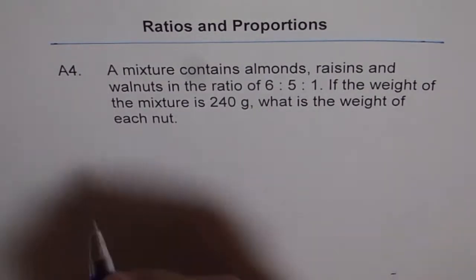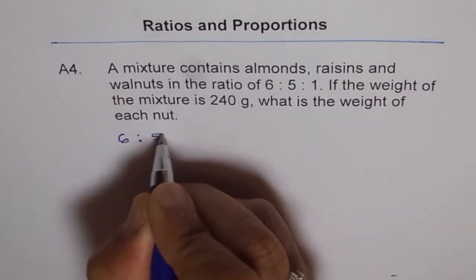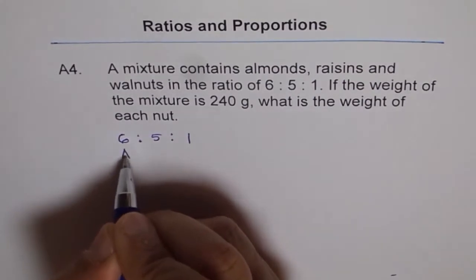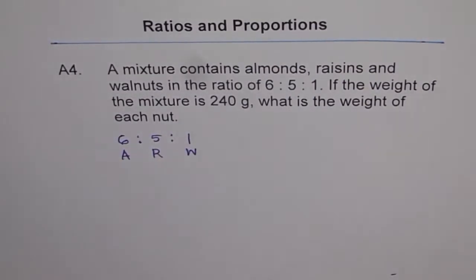So that is the question. What we are given is the ratio is 6 is to 5 is to 1. And these are almonds, raisins and walnuts.